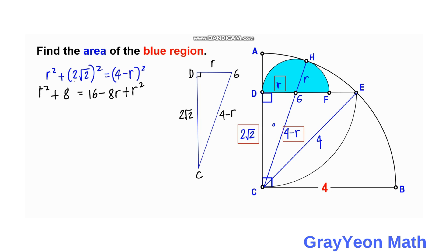Next we cancel this r squared on both sides and put this 8r to the left, so this becomes positive 8r. We have 16 minus 8, so 8r is equal to 8. So r is equal to 1 unit.